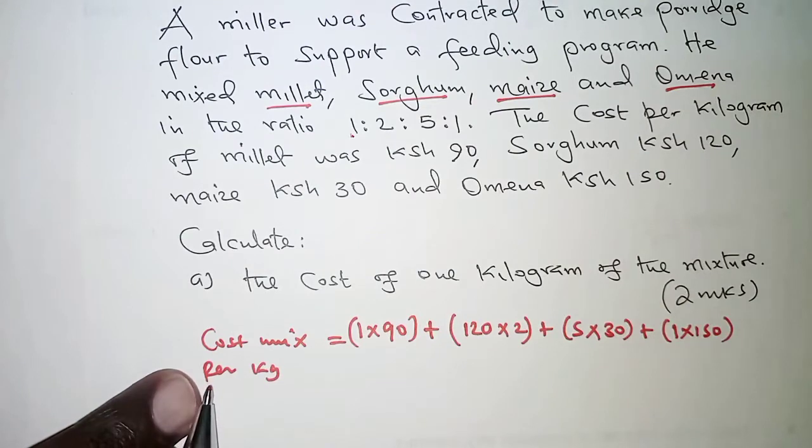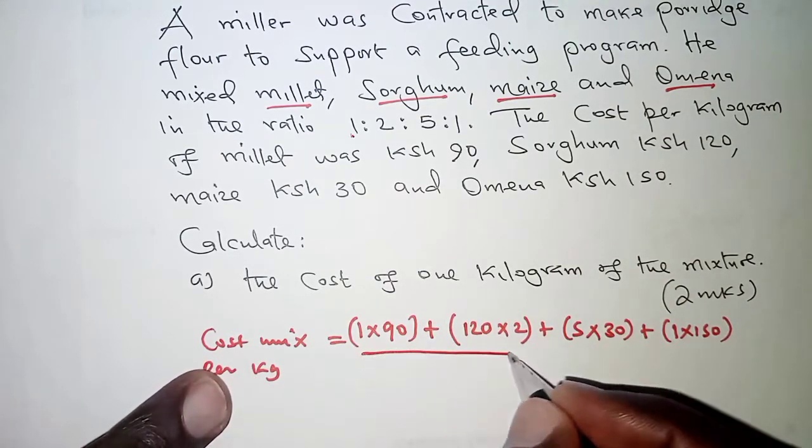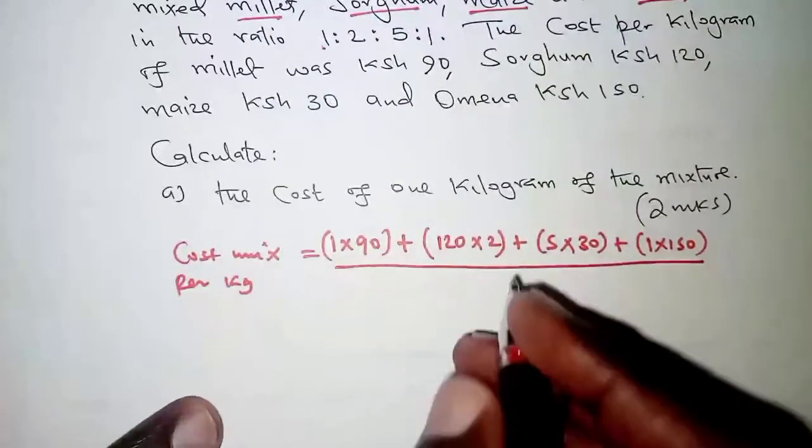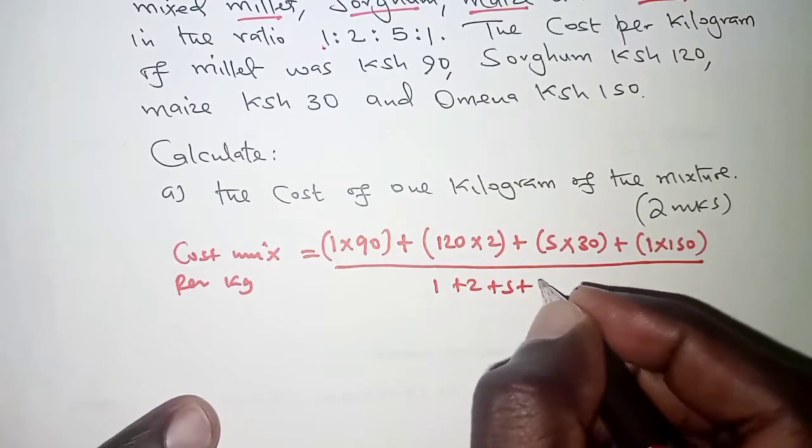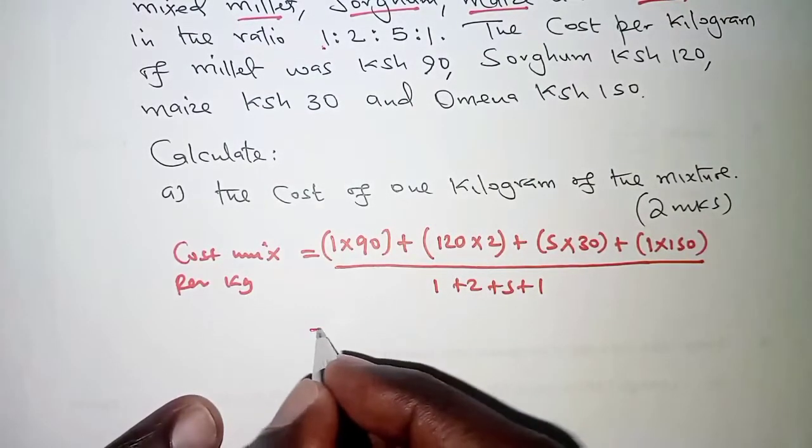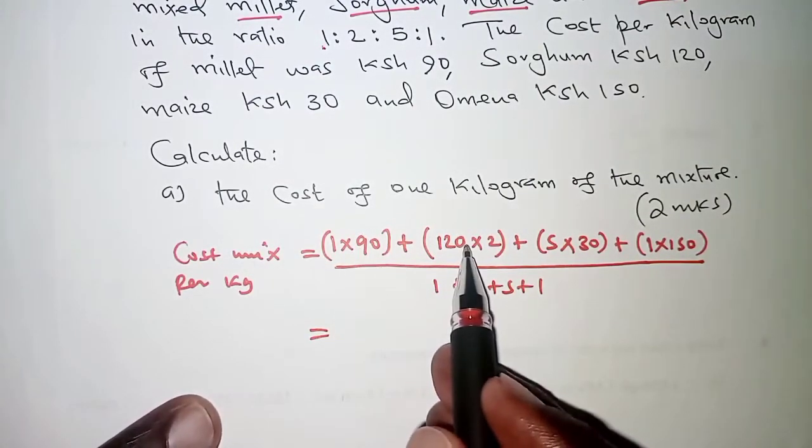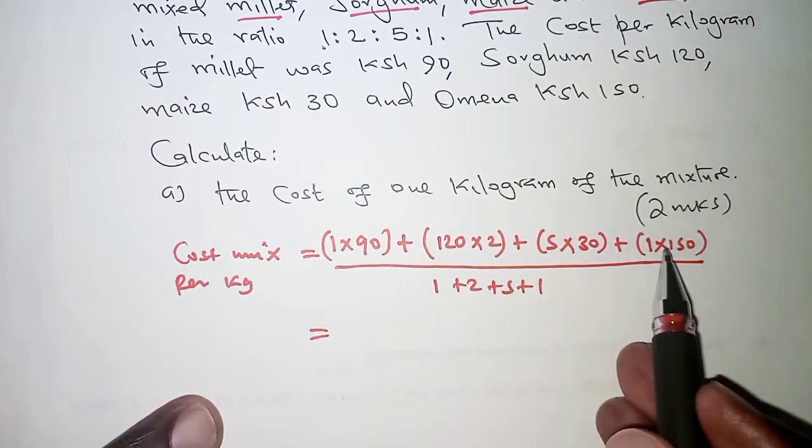Then this is the cost of all the masses. And if we have to get the cost of the mixture for just 1 kilogram, we'll have to divide the whole of this by the total mass. And that is 1 plus 2 plus 5 plus 1. So on the numerator, we have 90 plus 240 plus 150 plus 150.